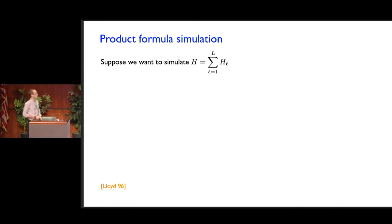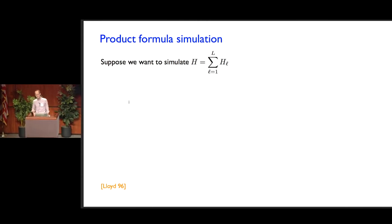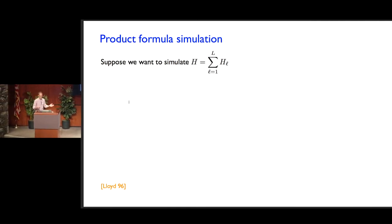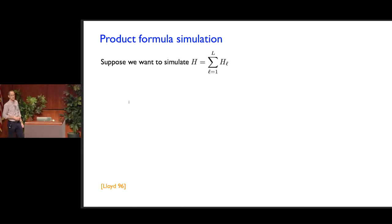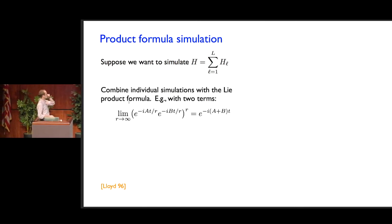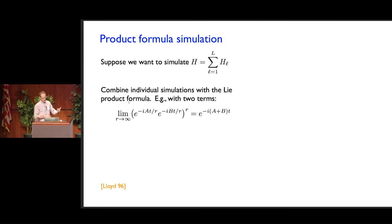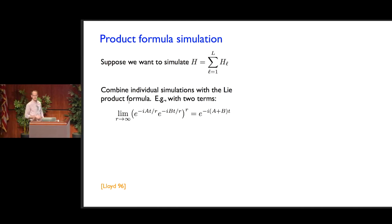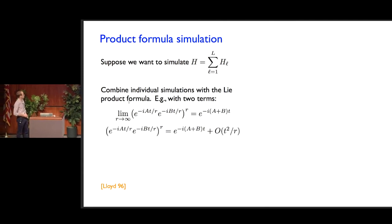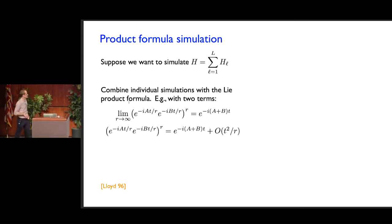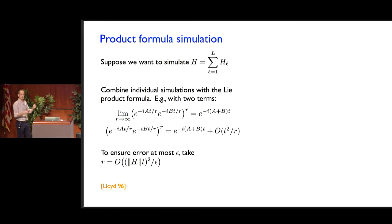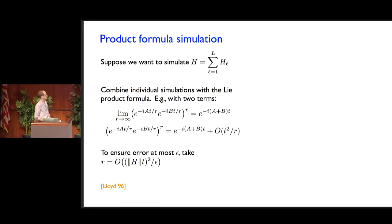The idea is that if we have some Hamiltonian which is a sum of terms — and for the example systems in this talk, the Hamiltonian will be a sum of two-body terms — you can simulate it with these product formulas. If the terms don't commute, of course the exponential of the sum is not just the product of the exponentials, but if you slice the Hamiltonian into many pieces and alternate between the various terms, this gives you a simulation. If you truncate this slicing at some finite level, you get some error in the approximation, but you can work out bounds that tell you how finely you must split the evolution to achieve some desired error.